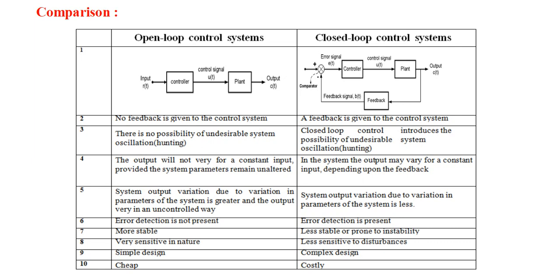Regarding stability: an open-loop control system is more stable, while a closed-loop control system is less stable or prone to instability. Regarding sensitivity: an open-loop control system is very sensitive in nature, whereas a closed-loop control system is less sensitive to disturbances.